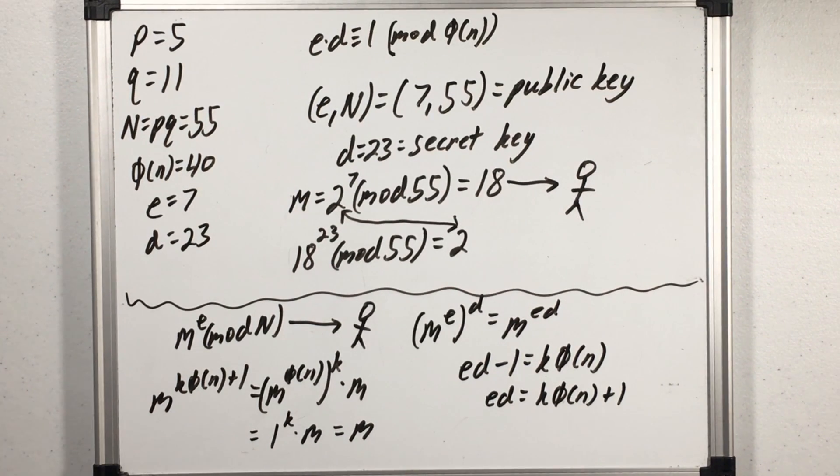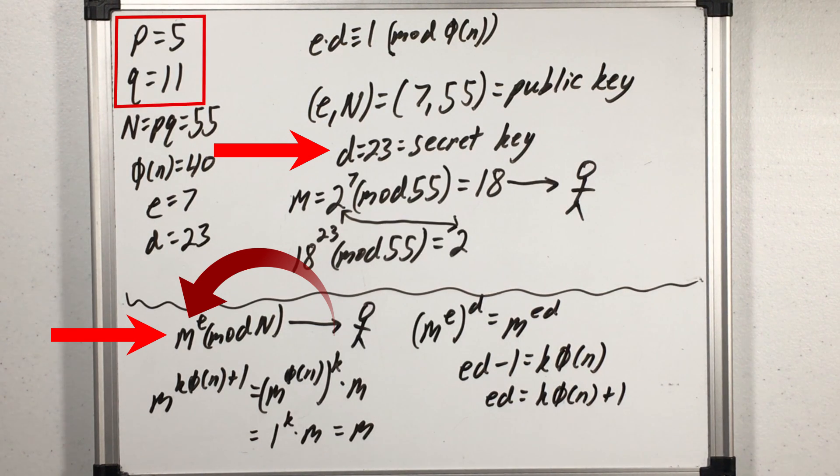Given a message it's easy to raise it to that public number e and calculate what it's congruent to mod n. But if someone intercepted that it's very hard to go from that to the original message m unless of course you have the secret key d. But that itself is very hard to calculate since the adversary wouldn't know the primes that made up n.